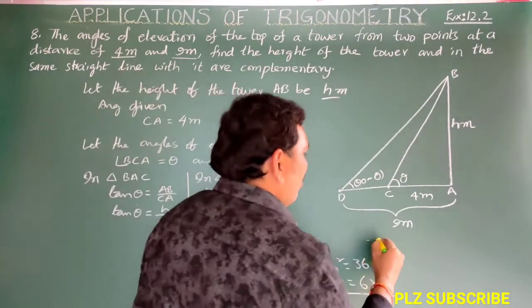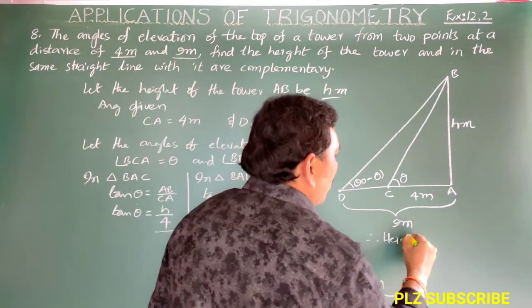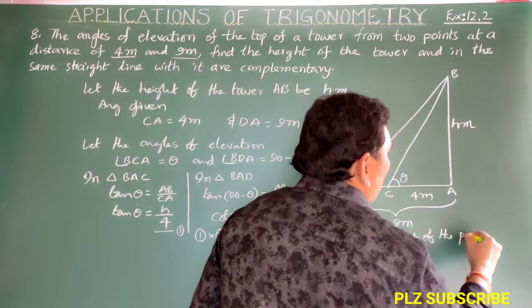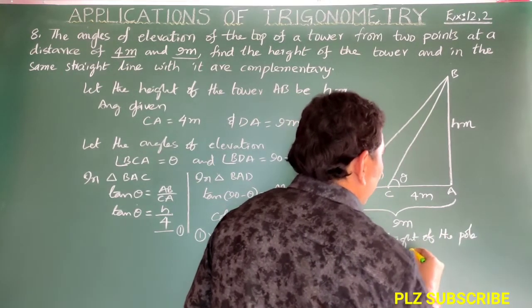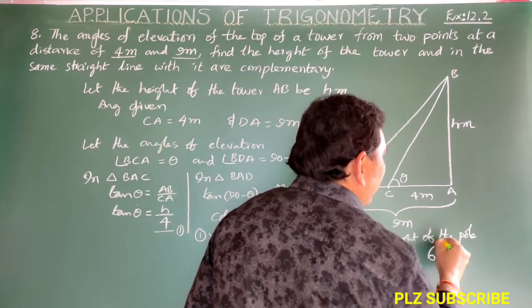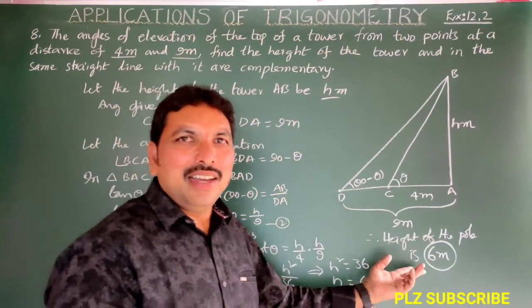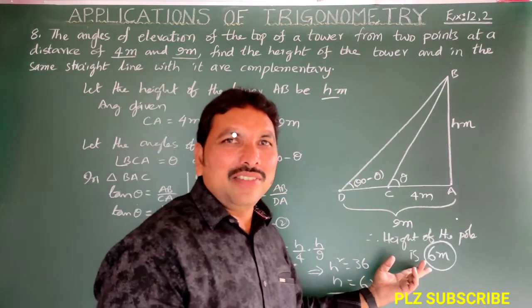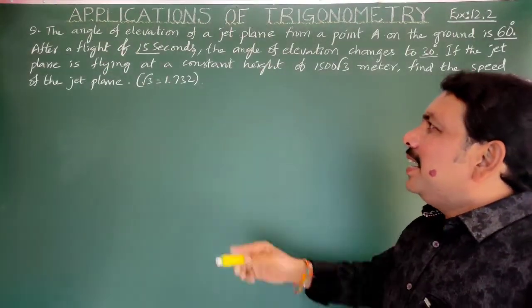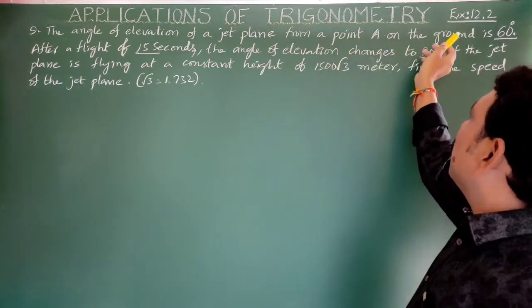Therefore, the height of the tower is 6 meters. This is the final sum in Exercise 12.2.